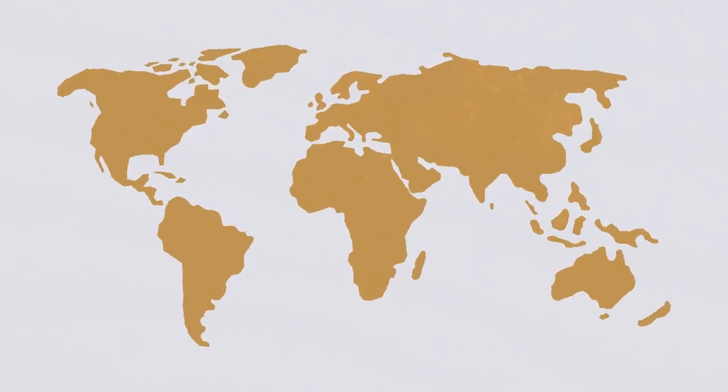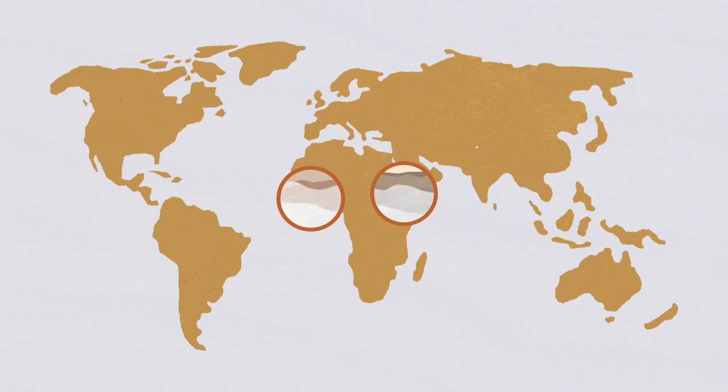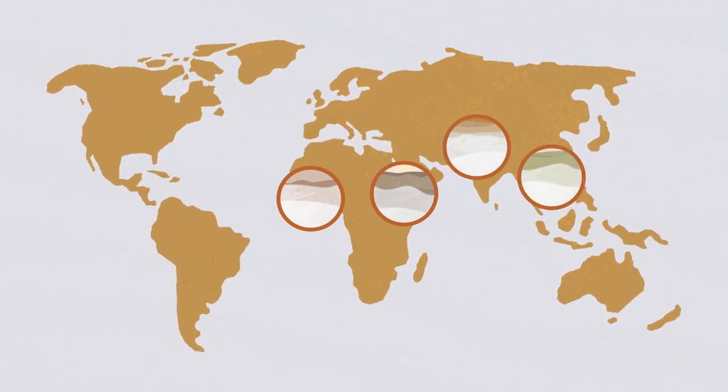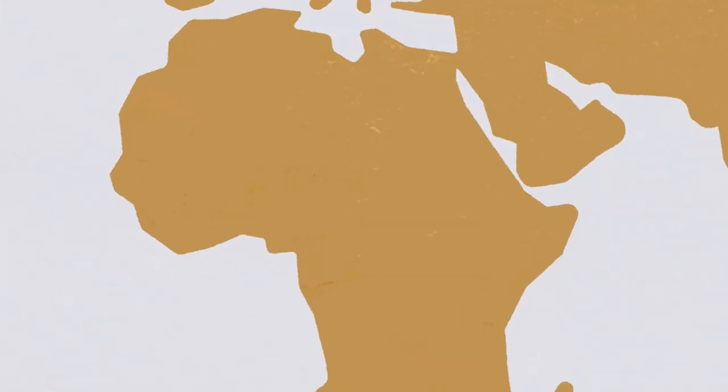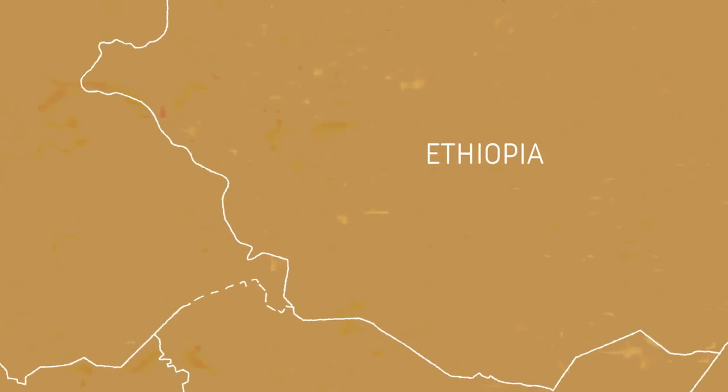This is especially important in tropical areas with extremely dry climates and where rainfall is unpredictable, such as the Omo Valley in Ethiopia.